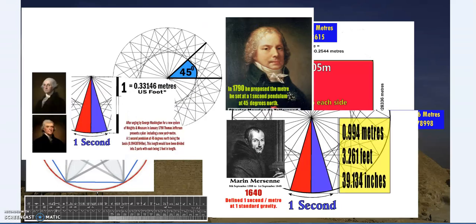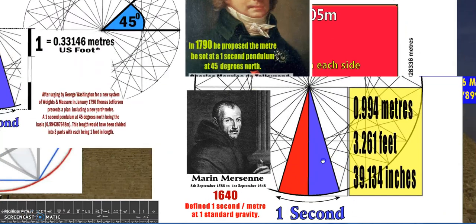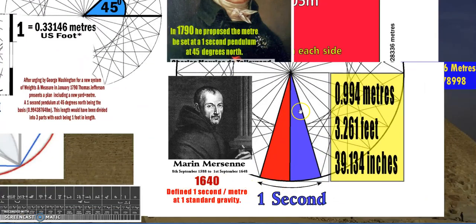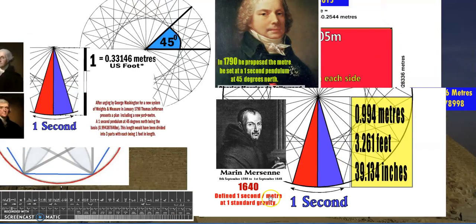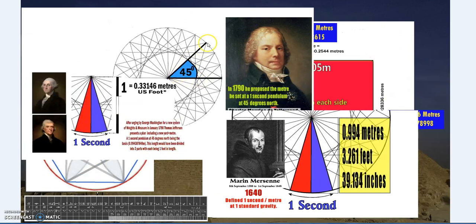Marin Mersenne defined the one second pendulum as 0.994 of a modern meter, but he defined it at 45 degrees north of the equator. That's an important point—halfway between the equator and the poles.